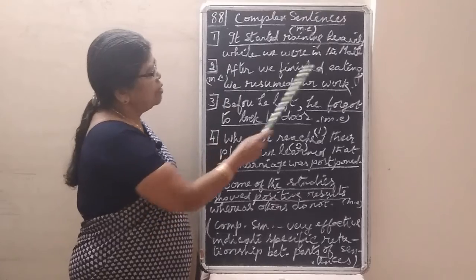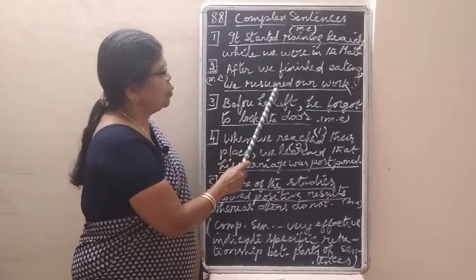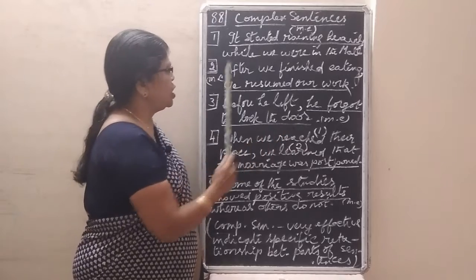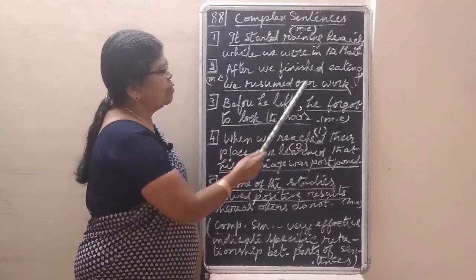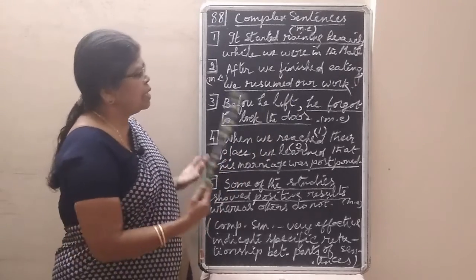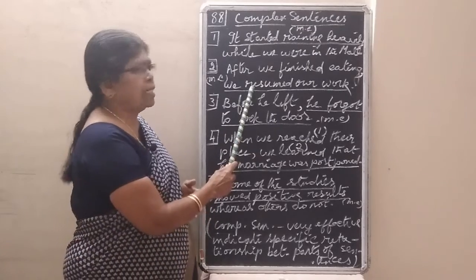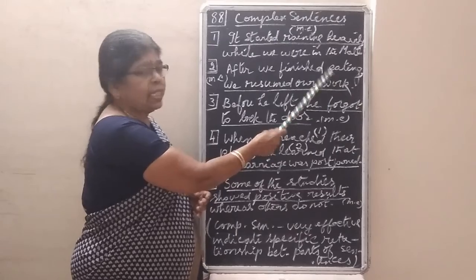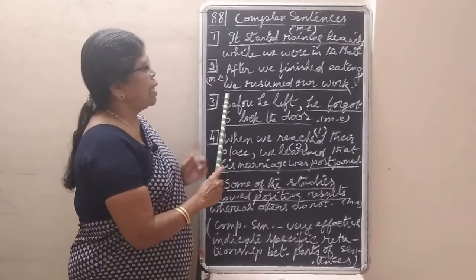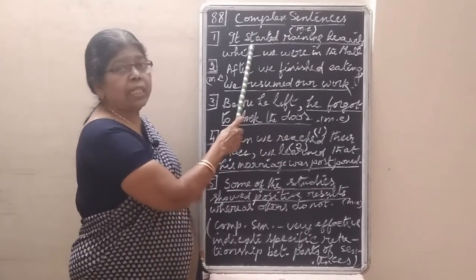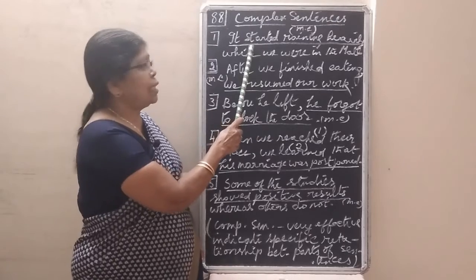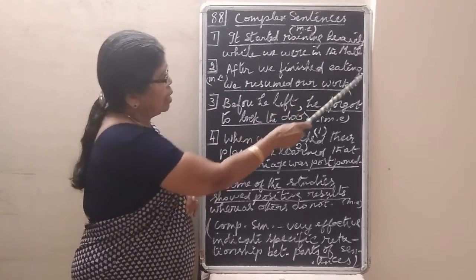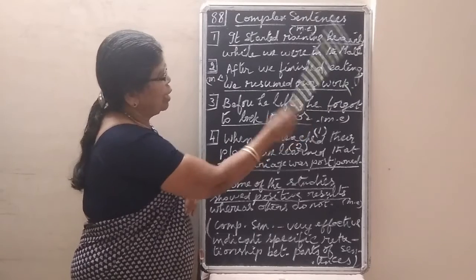After we finished eating, we resumed our work. Very simple. 'We resumed our work' — that's the main clause. 'After we finished eating' is the subordinate clause. Since the subordinate clause comes first in this sentence, we put a comma after it.